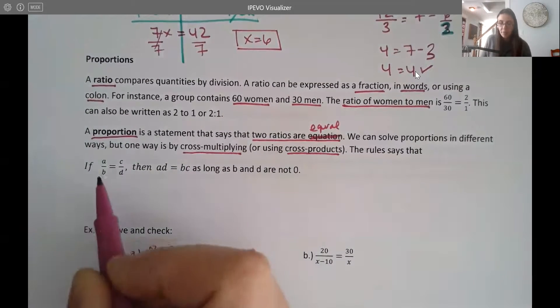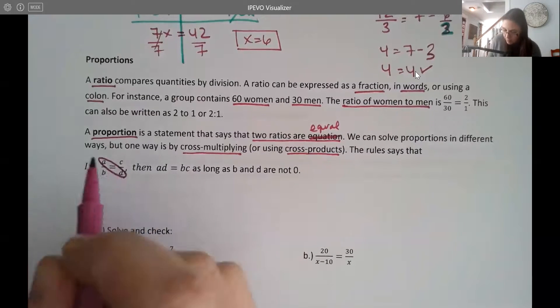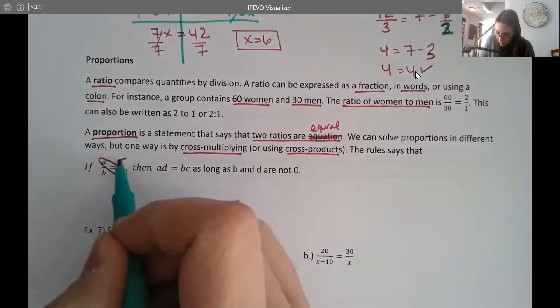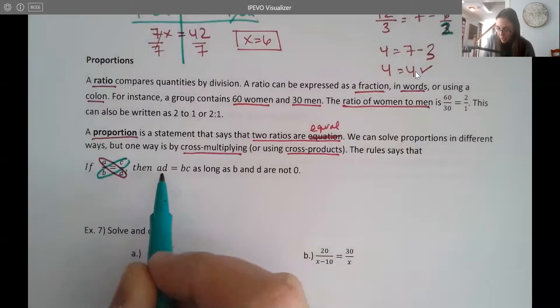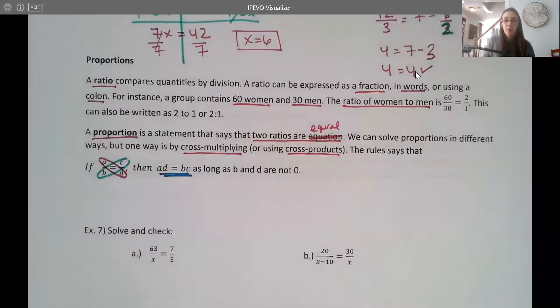And basically it says, if you have two ratios that are equal, then if you multiply them across this way, in this way, then those products are equal as well. So then you'd have sort of like a regular equation to solve instead.